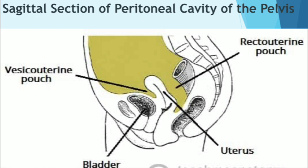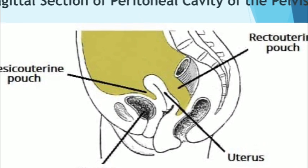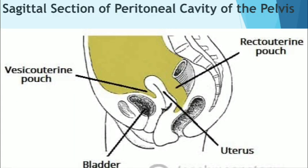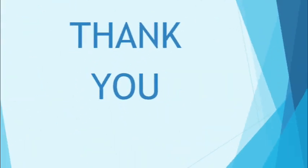In the male pelvis, ascending the rectum from inferior to superior: the inferior rectum is subperitoneal; the superior part is retroperitoneal. In the female, similarly, the inferior rectum is subperitoneal and the superior part is retroperitoneal. In both male and female, the peritoneum engulfs the sigmoid colon beginning at the rectosigmoid junction.